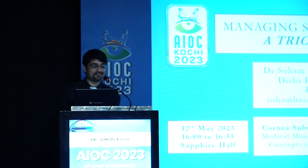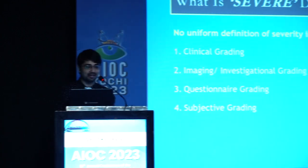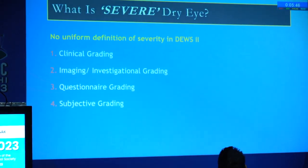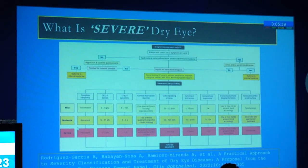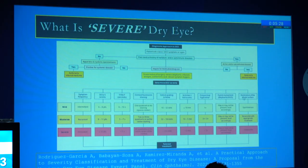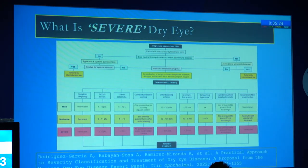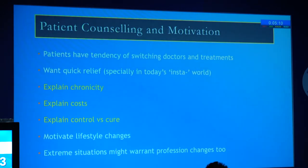I will be talking about managing severe dry eye — a very tricky area. There is no uniform definition as per the DEWS classification. You can have severity based on clinical grading, imaging, investigations, questionnaires, and subjective grading. This is from the Mexican group on dry eye, grading based on symptoms, questionnaires, clinically what you see on break-up time, the Oxford grading system, and looking at lids and restoration of the ocular surface. For severe dry eye, the first thing begins with patient counselling and motivation. These patients have already seen multiple doctors, switched multiple medications, and want relief — explain chronicity, costs, control versus cure, motivate lifestyle changes.